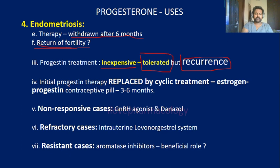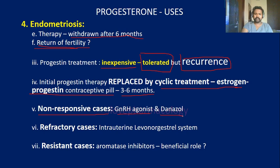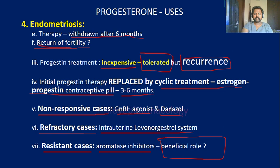If progesterone therapy is initially chosen, it can be replaced with cyclic treatment of estrogen, progesterone, or contraceptive pills for a further three to six months. In non-responsive cases, a gonadotropin-releasing hormone agonist or danazol can be used. For refractory cases, an intrauterine levonorgestrel system may be used, and in resistant cases, an aromatase inhibitor, though its beneficial role is unknown.